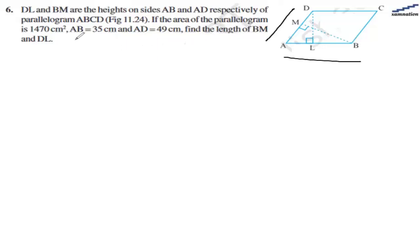We are also told the area of the parallelogram is 1470 cm². AB is given as 35 and ED is given as 49.